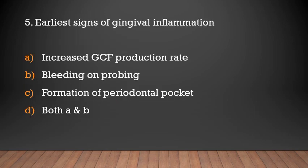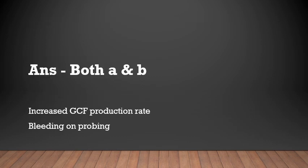Early signs of gingival inflammation include: increased GCF production rate, bleeding on probing, formation of periodontal pocket, or both A and B? The answer is both A and B — early lesion of gingivitis includes increased GCF production and bleeding on probing.